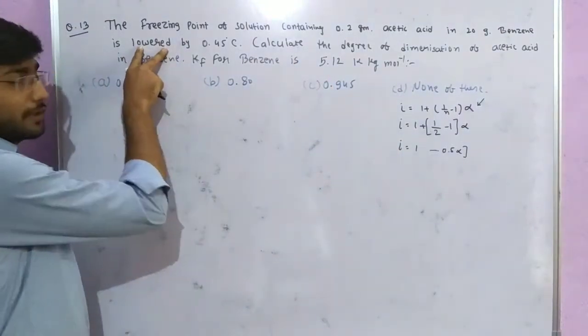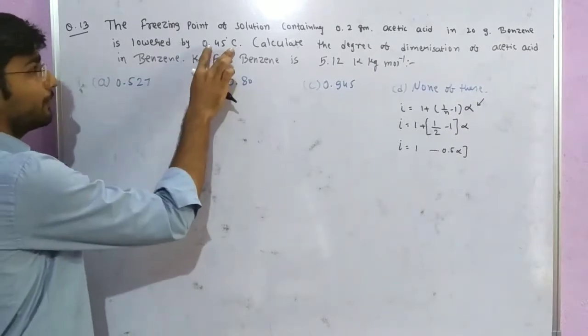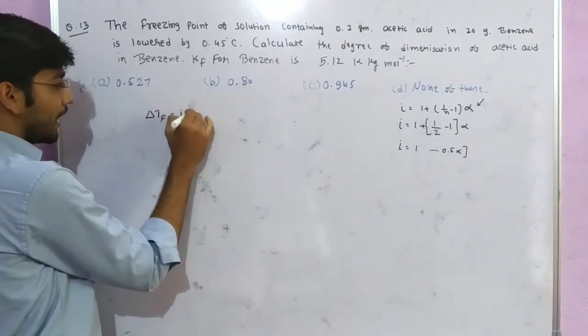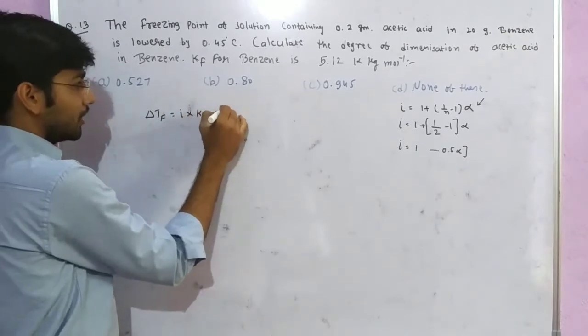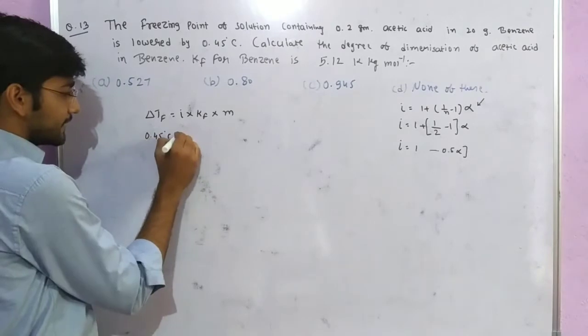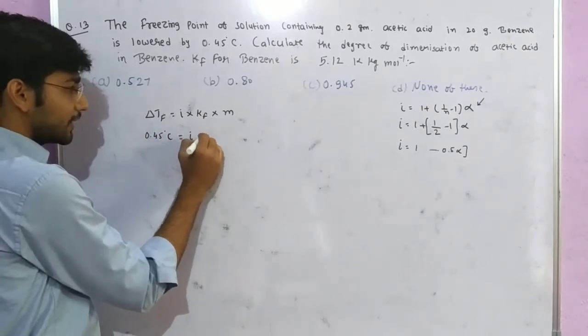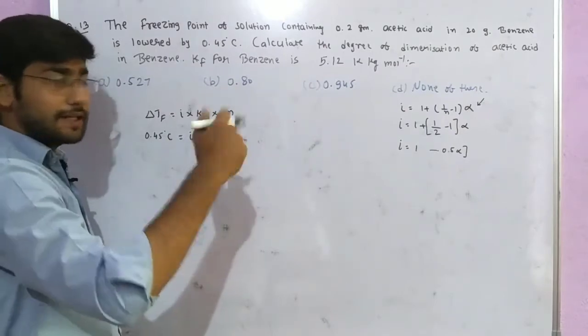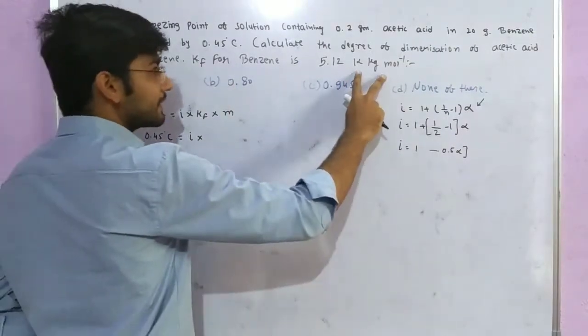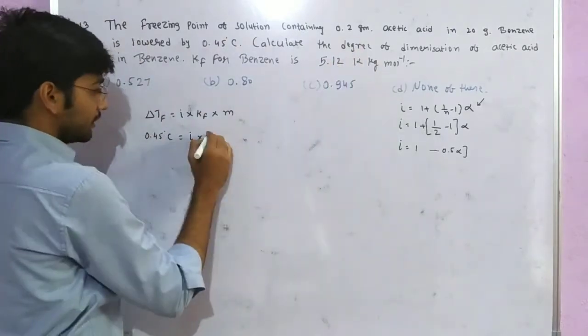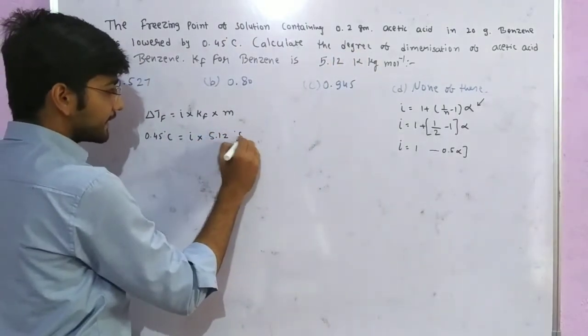The freezing point depression is 0.45 degrees Celsius. Using the formula delta Tf equals i into Kf into molality, where delta Tf is 0.45 degrees Celsius, i is unknown, Kf is 5.12 Kelvin kilogram per mole inverse. Converting to degrees Celsius gives 5.12 degrees Celsius per mole.